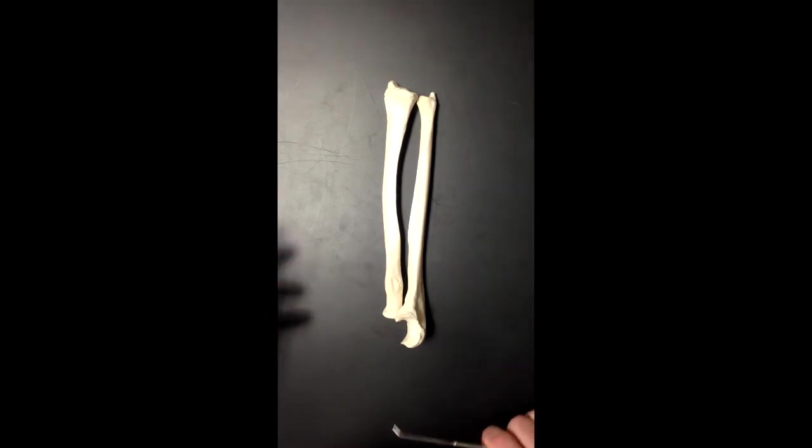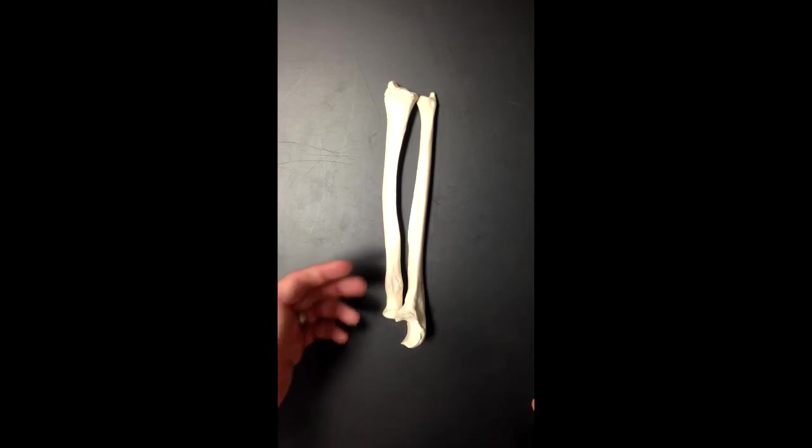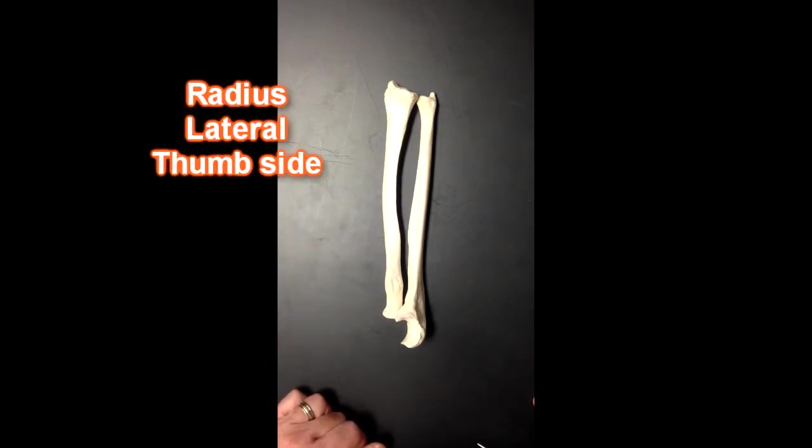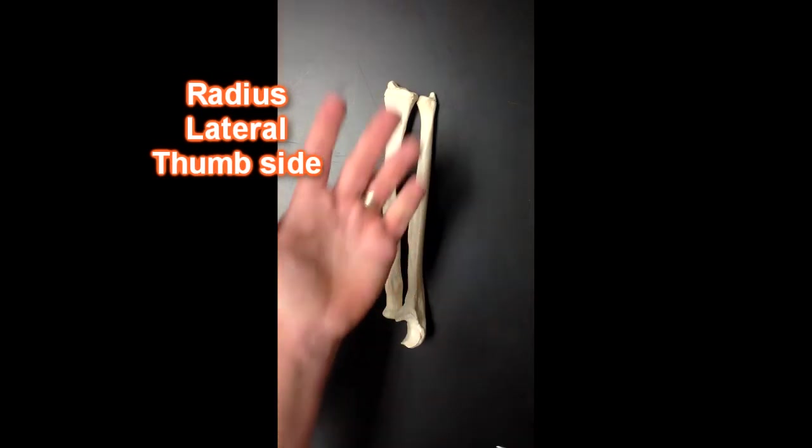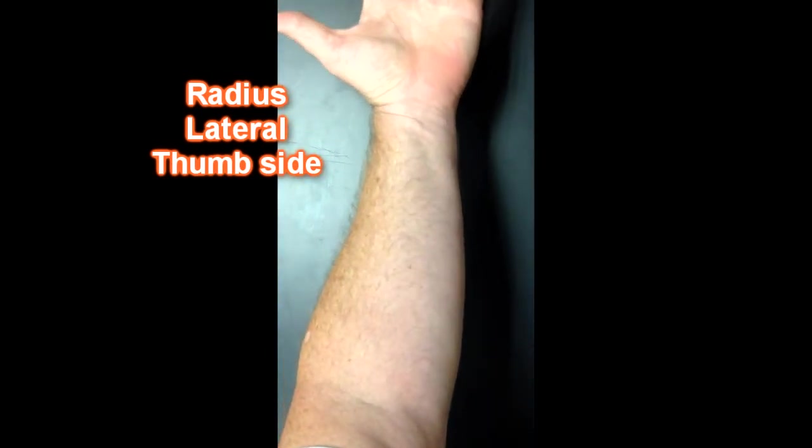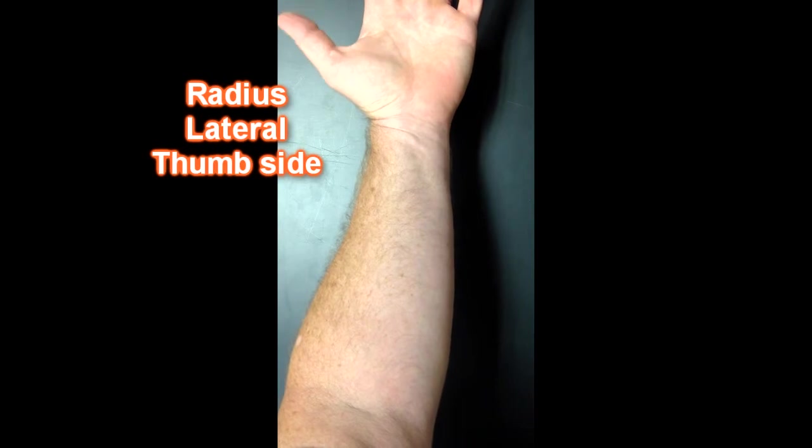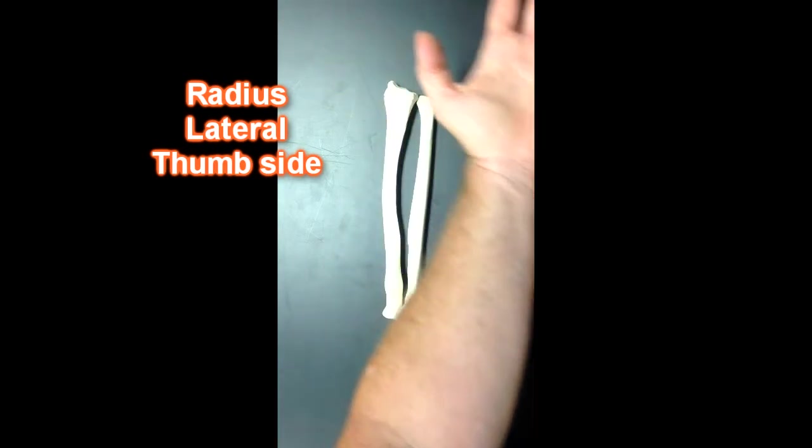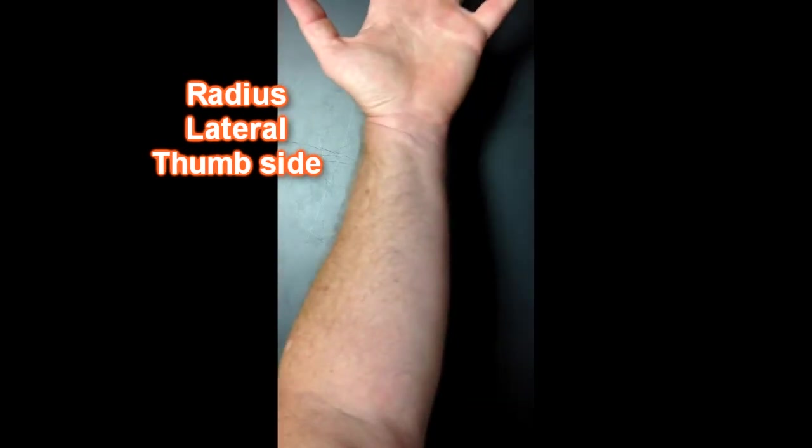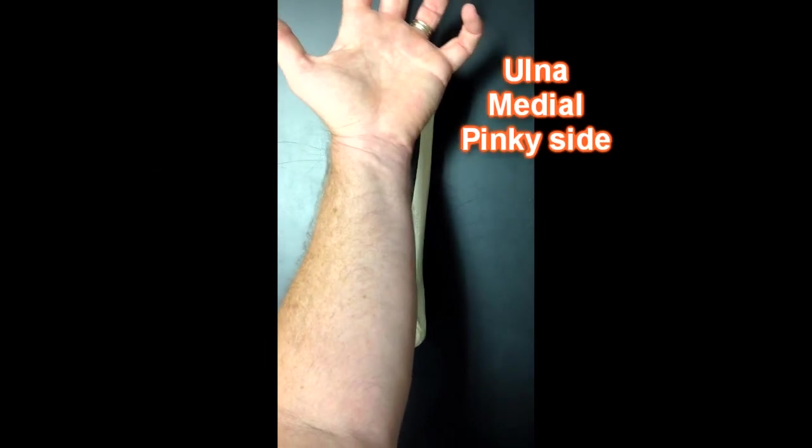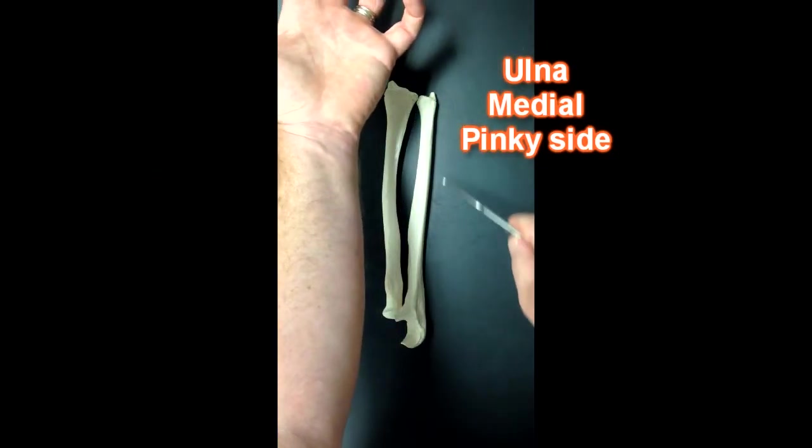Now another thing we need to know is which one is lateral and which one is medial. There's an easy way to remember that. The lateral of the two would be the radius and that's on the thumb side. So if we were standing in anatomical position you would notice that my thumb is over here and that's the side the radius is on. The pinky side would be the side that the ulna is on.